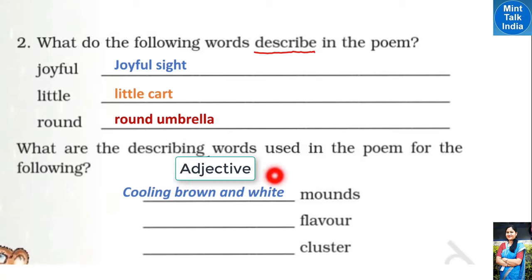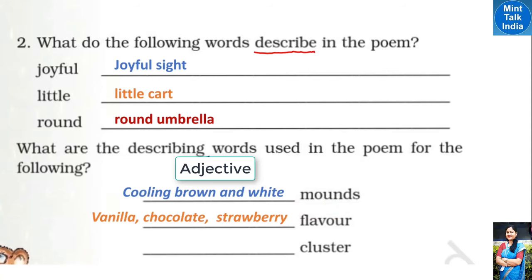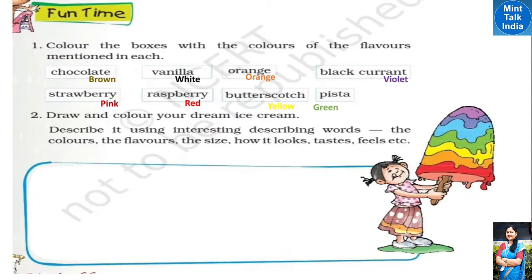The mounts of ice cream on the cone — how are they described in the poem? 'Cooling, brown and white mounts' — meaning cold chocolate ice cream and white vanilla ice cream mounds. The flavors described in the poem were vanilla, chocolate, and strawberry. And the 'cluster' — the poem describes thick clusters, like bees swarm sweet things, children swarm sweet ice cream in the same way.